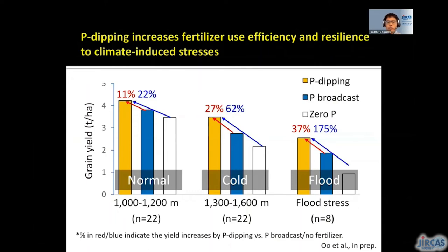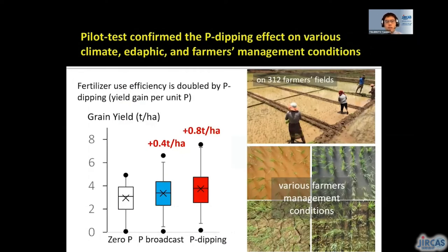This is a summary of our on-farm trials on the effect of P-dipping on rice in farmers' fields in Madagascar. P-dipping is basically effective to increase rice yield under normal phosphorus-deficient fields, but the effect is much greater under conditions with climate-induced stresses, such as low temperature and flooding stress. Based on these research results, we moved on to a pilot-scale test with more than 300 farmers in Madagascar. We confirmed that P-dipping is effective even under a range of farmers' management practices and field environmental conditions. On average, agronomic fertilizer use efficiency — or yield gain per unit of phosphorus application — is more than doubled by using this P-dipping technique.